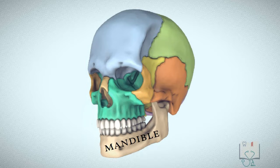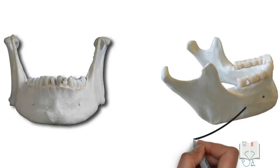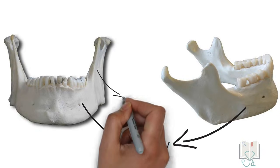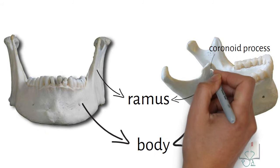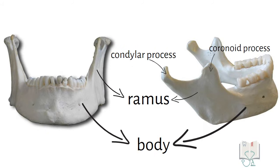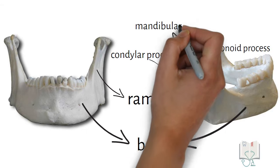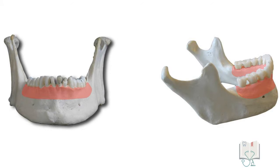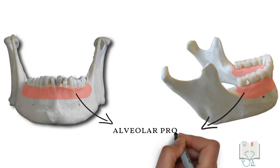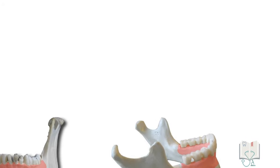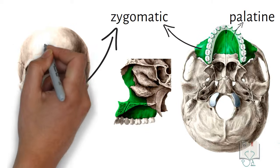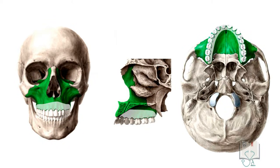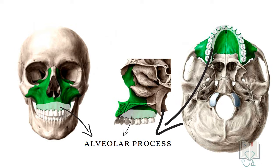In the skull, mandible and maxilla are the two bones which form the jaws. Anatomically, the mandible can be broadly divided into a horseshoe-shaped body and quadrilateral-shaped ramus. The superior surface of the ramus has the coronoid process anteriorly and condyloid process posteriorly, separated by a concave mandibular notch. The upper border of the body of the mandible is formed by the alveolar process, which is horseshoe-shaped. The maxilla, on the other hand, is a pyramid-shaped bone with palatine process, zygomatic process, frontal process, and the alveolar process, which when joined together is horseshoe-shaped.